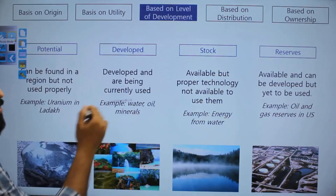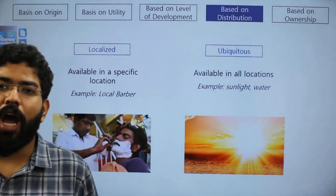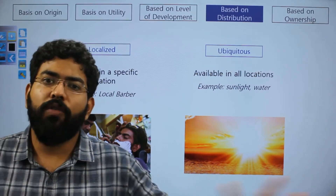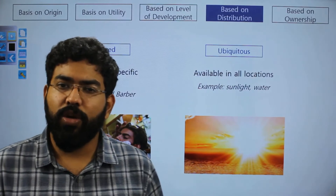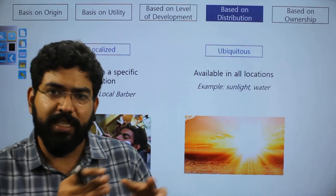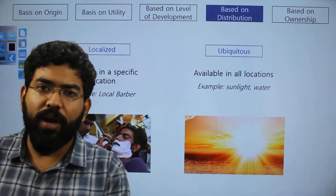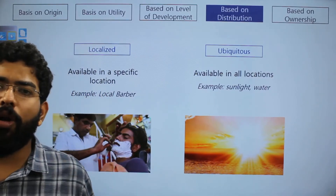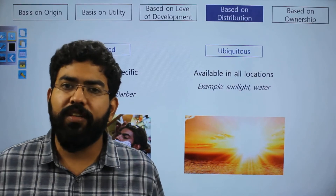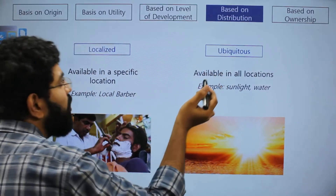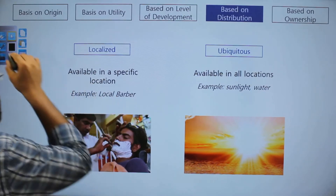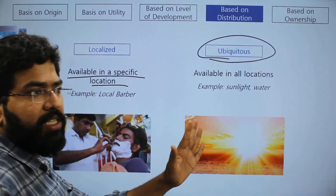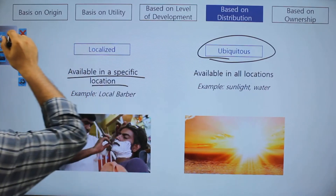Based on distribution: if a resource is found at a specific location, it is localized — for example, minerals like iron ore are found only in specific areas such as Bihar, or oil in Gujarat. However, water and sunlight are distributed all over the world, making them ubiquitous. So if it is localized it is found in a specific location; if available everywhere, it is ubiquitous.